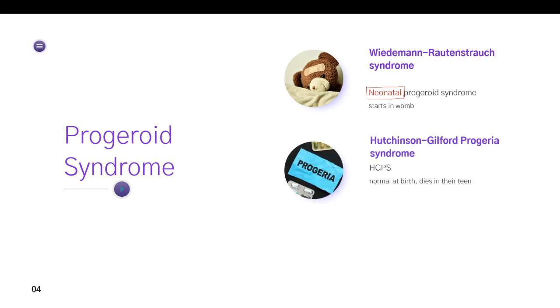The second important progeroid syndrome is Hutchinson-Gilford progeroid syndrome, in short, HGPS. Now HGPS children are normal at birth, basically they are apparently normal. Then disease starts appearing by the age of 2 years and gradually all the features evolve and they finally die in their teens.